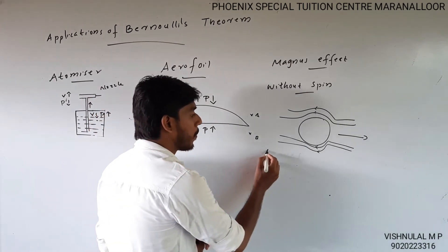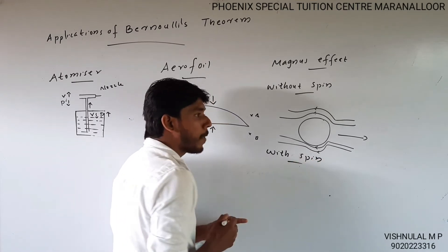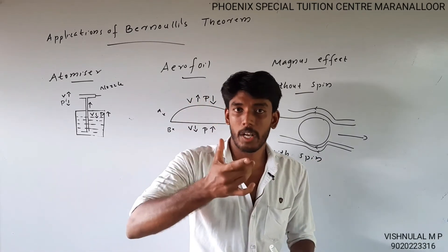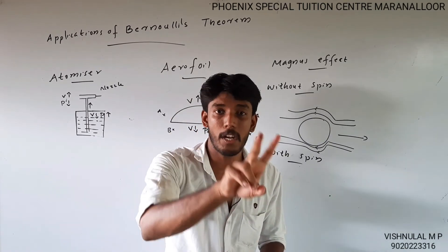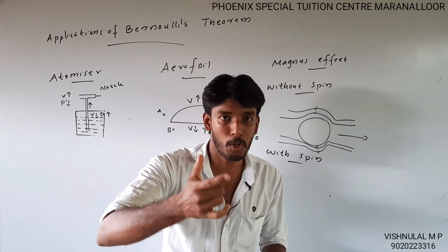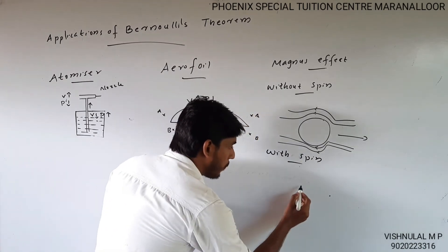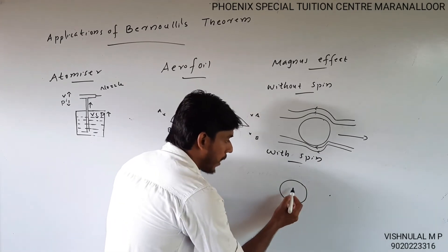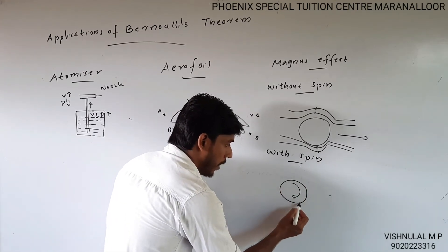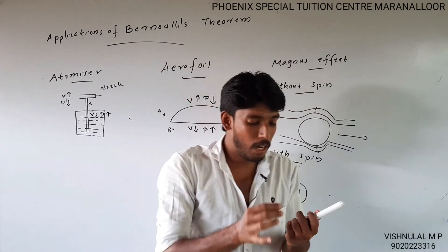Now with rotation - the ball spins. One side, the ball rotation and air flow are in the same direction, so velocity increases. The other side, they oppose each other, so velocity decreases. Same pressure on both sides without spin. But with spin, one side has higher velocity than the other.